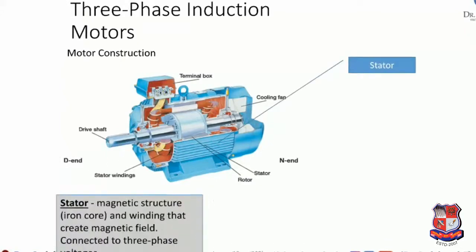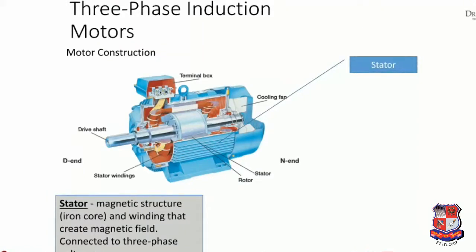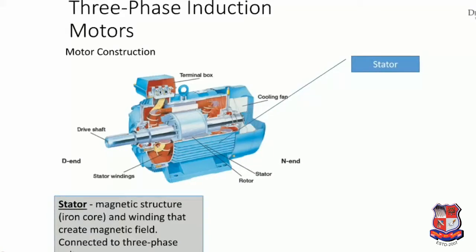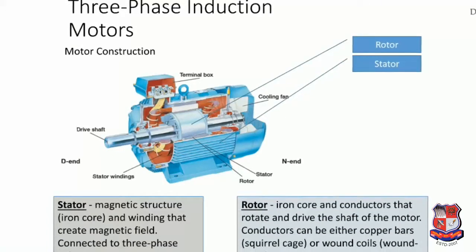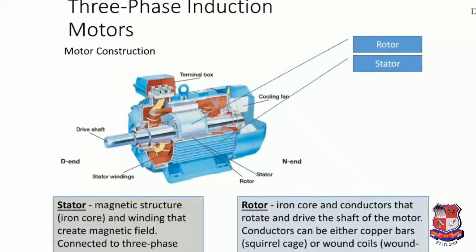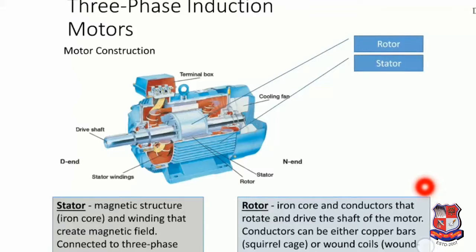The stator structure is made of magnetic material and creates a magnetic field. The stator is connected to three-phase voltage through its windings. This is the case of the windings, which is the stator. This is the rotor. The rotor consists of an iron core and conductors that rotate and drive the shaft of the motor.